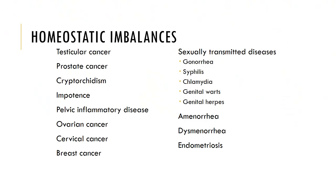Some homeostatic imbalances include testicular cancer, which is common in young men aged 15 to 35, with survival rates around 95 percent. Prostate cancer, ovarian cancer, cervical cancer, and breast cancer are also noted. Cervical cancer is the most common reproductive cancer in women aged 15 to 34, especially in cases with a history of sexually transmitted diseases, and about 70 percent of cervical cancers are linked to HPV, the human papillomavirus.